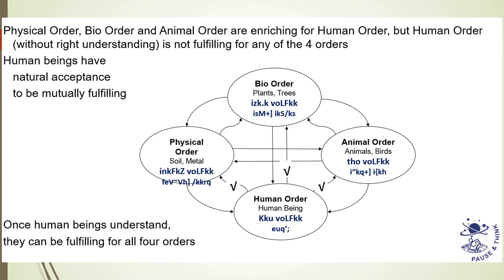When we refer to our natural acceptance, we want to fulfill all the orders — then only we can achieve interconnectedness. For example, if we give some grass to a cow, it will give milk and we can consume that. In that way, we are connected to the animal order. This is an example of mutual fulfillment.